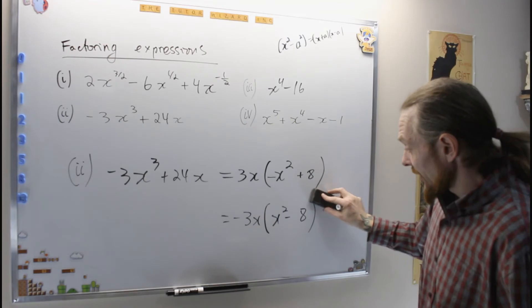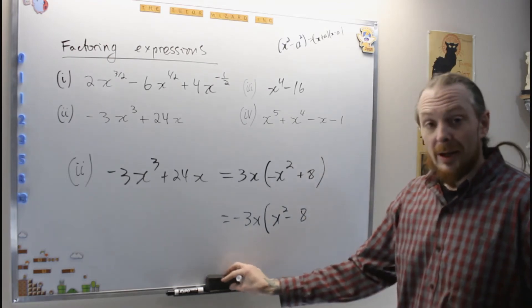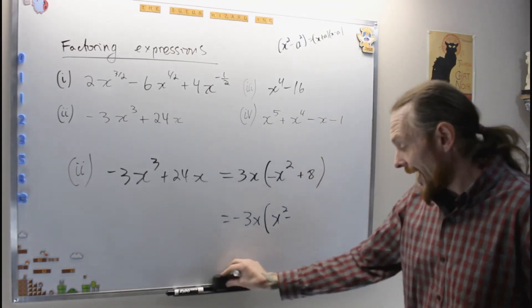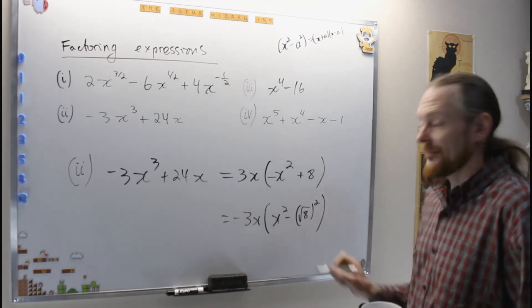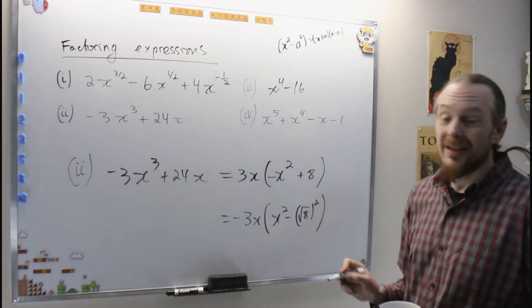But I don't have a perfect square, so what am I going to do with this? Root 8, what I'm going to do, or 8, I'm going to turn into the square root of 8 squared. So that's the clever dirty trick.